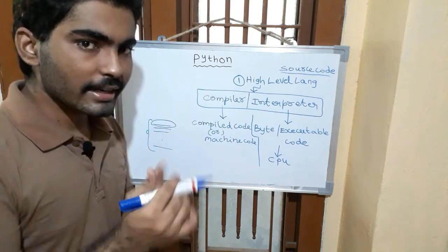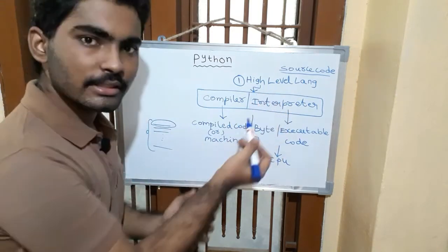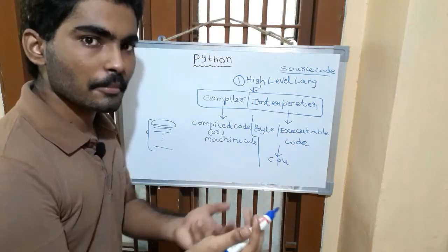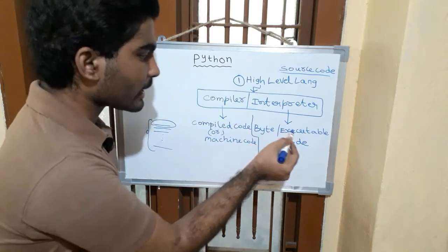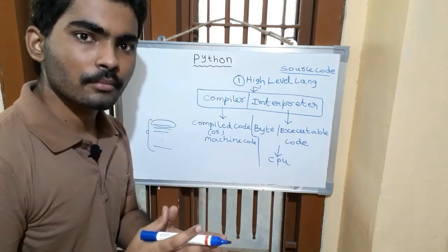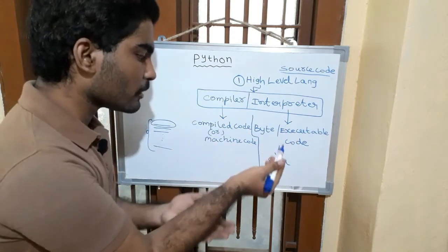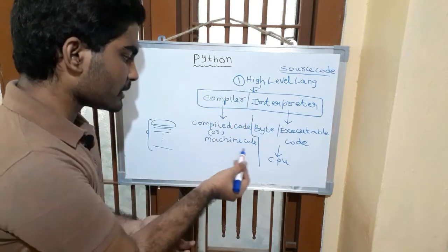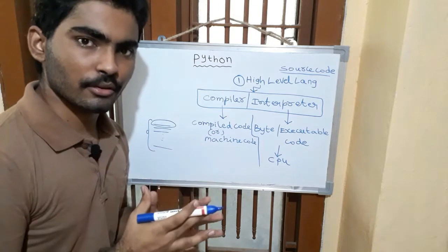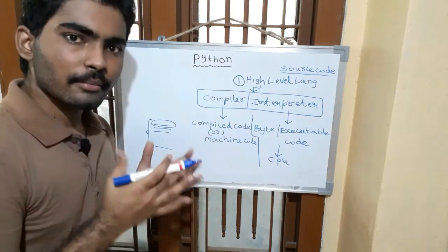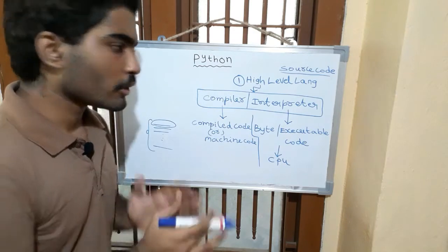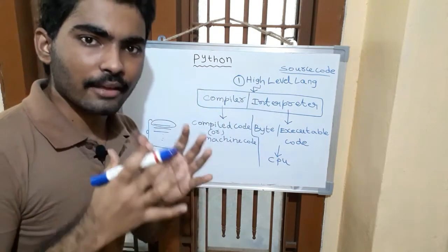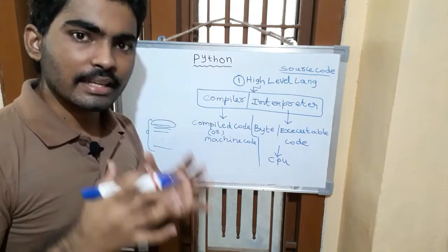What is the interpreter? If you give a high-level language, it converts into an intermediate-level language — the byte code. By that byte code, you can produce the executable code. Python is an interpreted language.